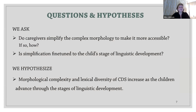The current study examines whether and how mothers simplify the complex morphology in Inuktitut to make it more accessible to children, and whether such simplification is fine-tuned — that is, whether child-directed speech is adjusted in accordance with the children's stage of linguistic development. We hypothesize that the morphological complexity and lexical diversity of child-directed speech increases as the children advance through the stages of linguistic development.